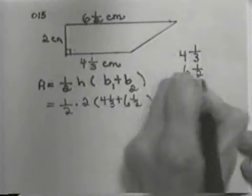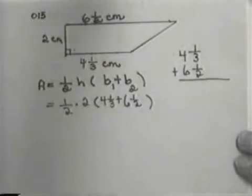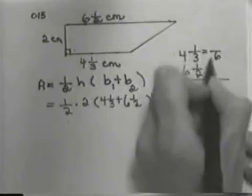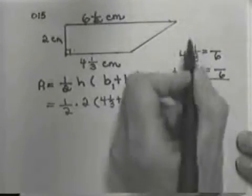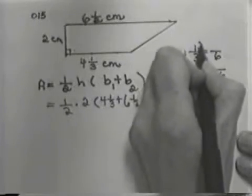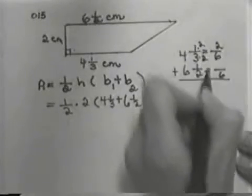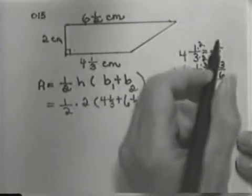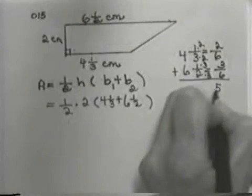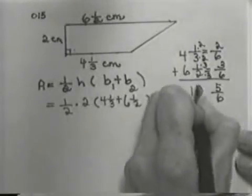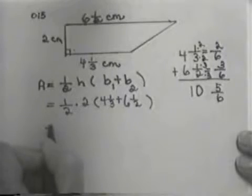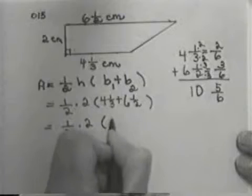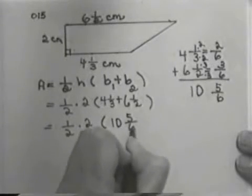4 and 1 third and 6 and 1 half. Now, if you'd prefer, you can make them improper fractions and add them that way, but I'm just going to go ahead and leave them mixed numbers. My common denominator would be 6. If I'm adding, you've got to have a common denominator. So I multiply by 2 and get 2 6's and by 3 and get 3 6's. So I'm adding 2 6's and 3 6's. That would give me 5 6's, and 4 and 6 would be 10. So I'd have 1 half times 2, and then inside the parentheses, I'd have 10 and 5 6's.